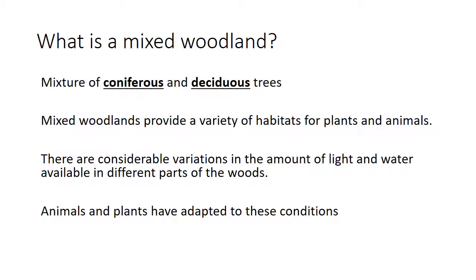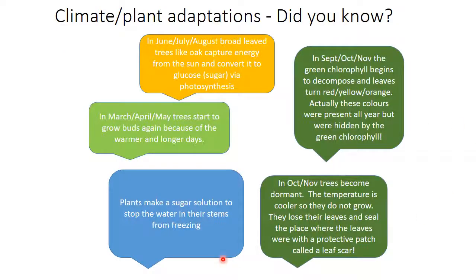Mixed woodland — coniferous and deciduous trees — provides a variety of habitats for plants and animals, and the animals and plants have both adapted to these conditions. Starting from March, April, May, you can work your way round to show the yearly cycle of adaptation for deciduous trees within the Kingswood. By October and November you've got fewer hours of sunlight, which is why you see those different adaptations, whereas June, July, August have longer sunlight hours. If you're not sure about any of this annual cycle, come and see us in H7.